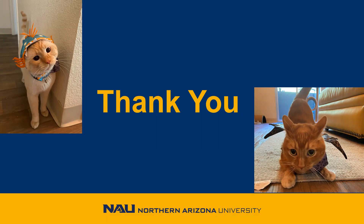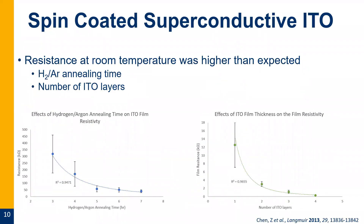Question: Do you have data on the thickness of the ITO layers? With four layers, I'd assume it's maybe about 180 to 200 nanometers thick, based on the paper I referenced, because that's what they used. We haven't actually measured the thickness of our films yet though. Is there a thickness you're looking for? We think we're going to be happy with four to five layers, but we'll need more characterization to confirm.